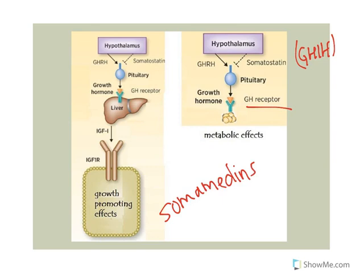Growth hormone binds to a receptor in the liver, and the liver produces a somatomedin called IGF-1. IGF-1 is insulin-like growth factor and is probably the more important somatomedin, because it has effects like insulin. The somatomedins then have effects on targets, with more growth-promoting effects, and we'll go over specifically what those are.